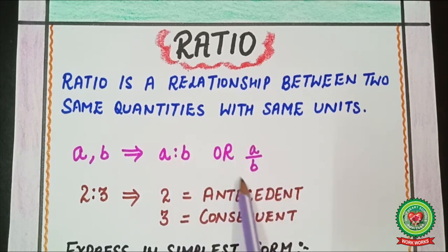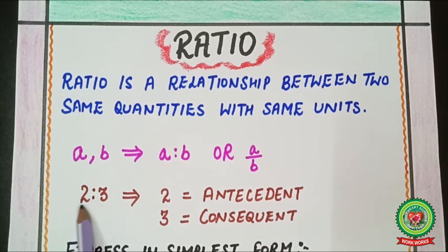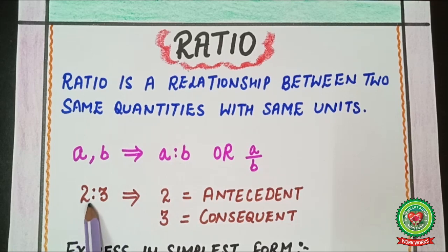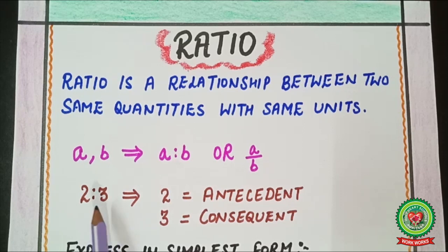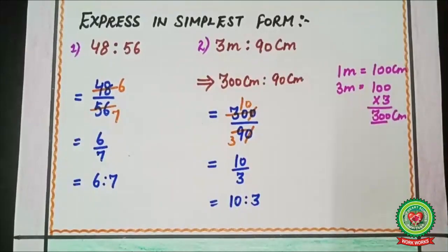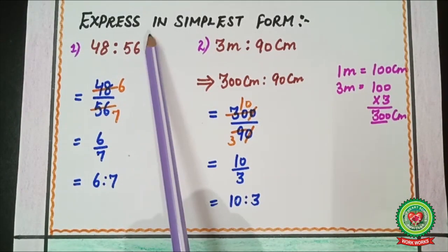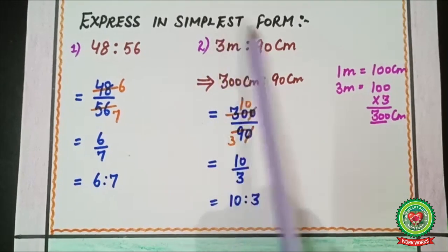Taking an example of 2 ratio 3, that means two is to three. Here, 2 is the first term, also called the antecedent. Similarly, 3 is the second term, also called the consequent.